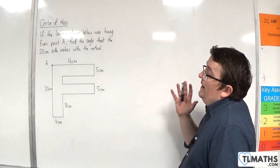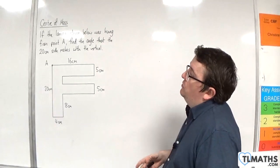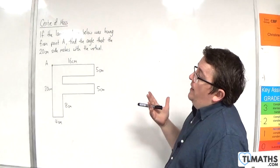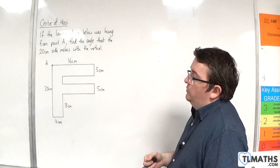In this video, we have a laminar which is made from three rectangles, all of the same material, and it's going to be hung from point A. Find the angle that the 20 centimeter side makes with the vertical.